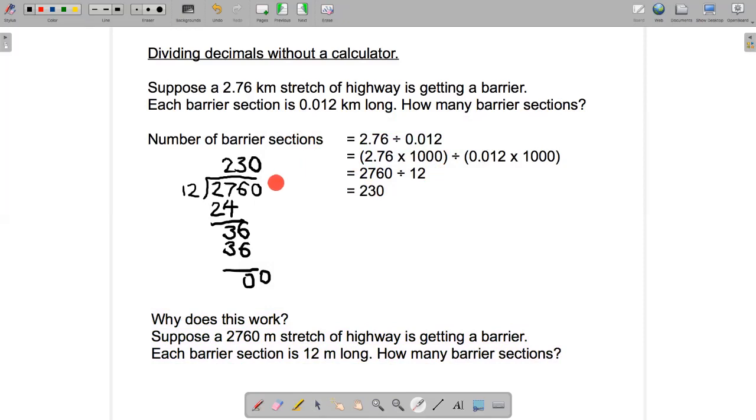We solved that problem right here. Actually, right here when we did the long division. Okay, so this is illustrating that if we can create an equivalent division problem that uses whole numbers, whole numbers that are easy to work with, then we can solve the original problem with the decimals that, at first sight, looks like it might be kind of tricky to solve.